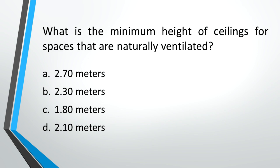What is the minimum height of ceilings for spaces that are naturally ventilated? A: 2.7 meters, B: 2.3 meters, C: 1.8 meters, D: 2.1 meters. Answer: A, 2.7 meters.